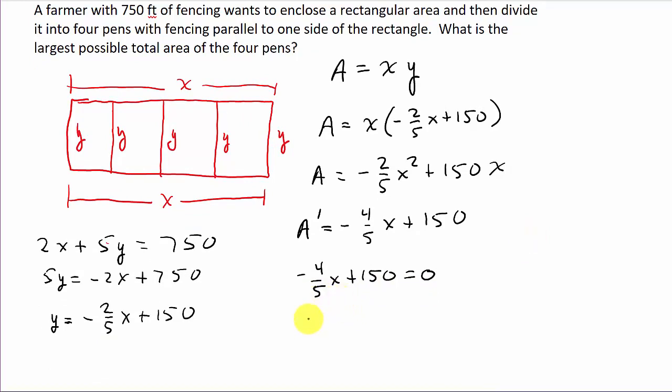So, I get negative 4 fifths x plus 150 equals 0. So, that's going to give me 150 equals negative 4 fifths x. And so, if I multiply everything by negative 5 fourths, that's going to give me x is equal to 187.5.